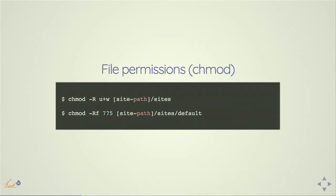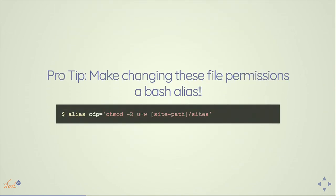Every single time — this is just on my checklist — you've got to change your file permissions. Pro tip: I'm big on the command line, and I'm going to talk about bash aliases. A bash alias is a little shortcut, like 'CDP', that runs a whole long command for you so you don't have to remember it or write it down in documentation. When I type CDP into my bash shell, it runs the permission change command for me.